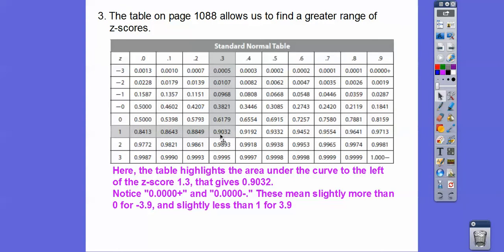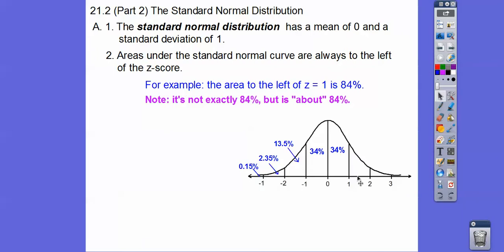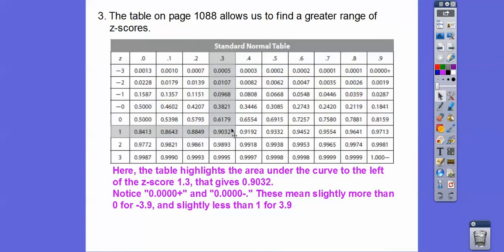So I know 1.3 is over 50%. And negative 1.3 would be like right about there. So the area to the left would be very small at negative 1.3 and the area to the left of positive 1.3 would be very large. So it's 0.9032. And then notice right here, this 0.0000 plus, this just means it's slightly more than 0.